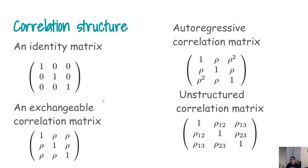There are different kinds of correlation structures we can assume. The identity correlation matrix means each observation from the same subject is essentially independent — no correlation between one time period and another. The exchangeable correlation structure assumes a fixed correlation from one time period to another, so it does not matter whether it is the third month or the eighth month — all correlations are the same. The identity matrix is a separate structure.